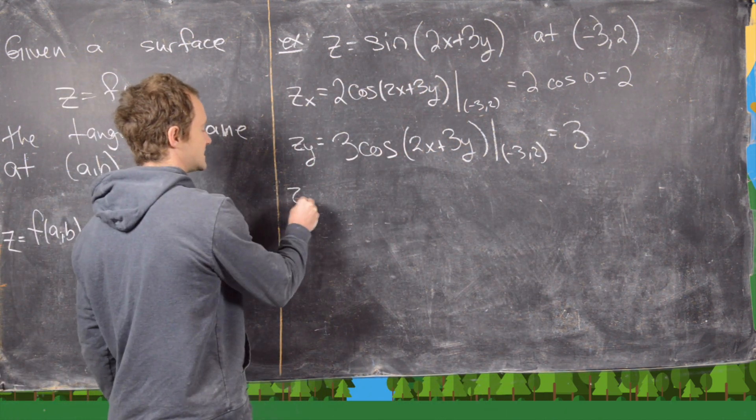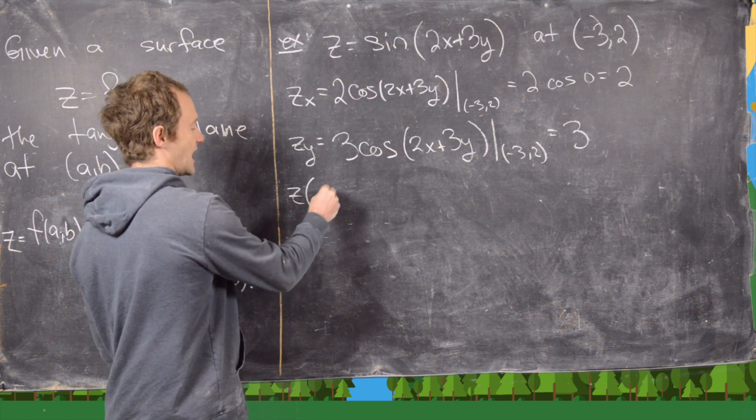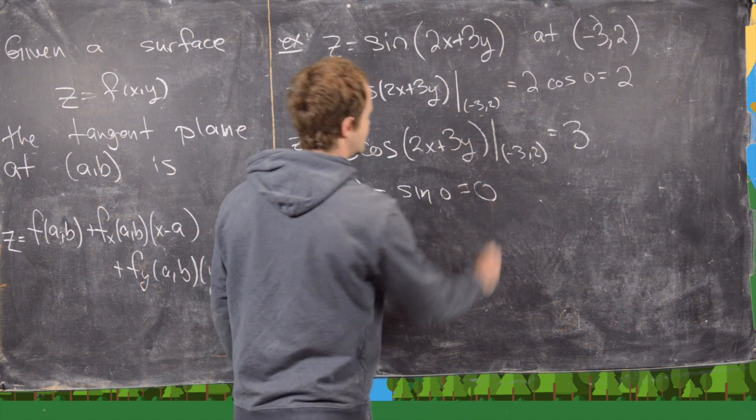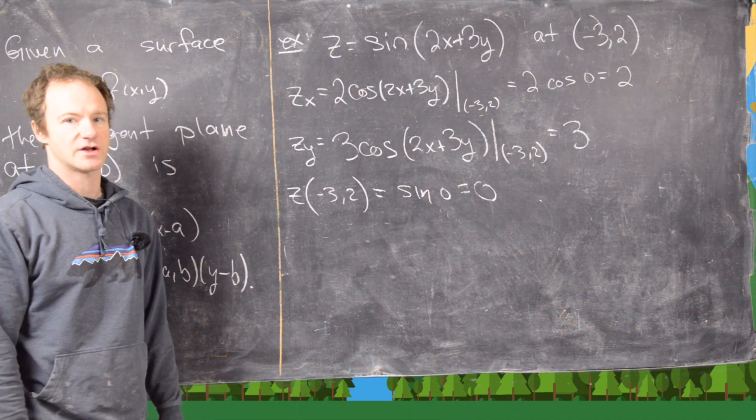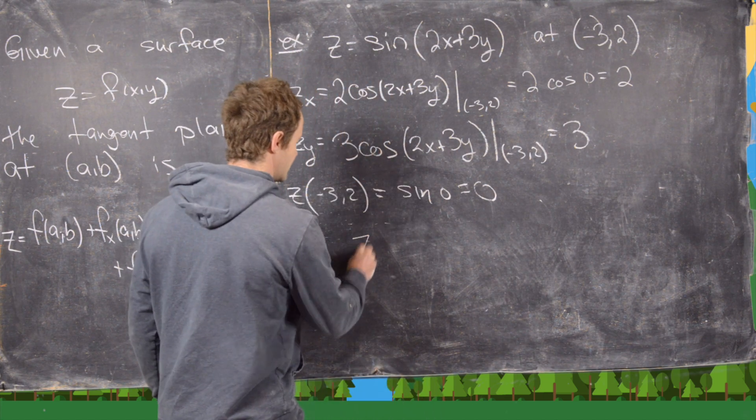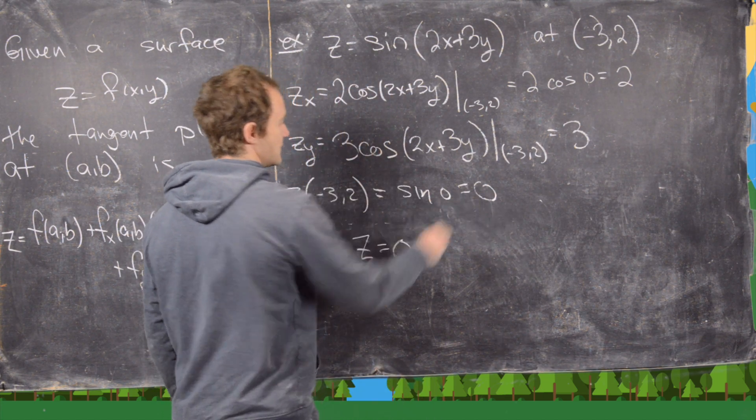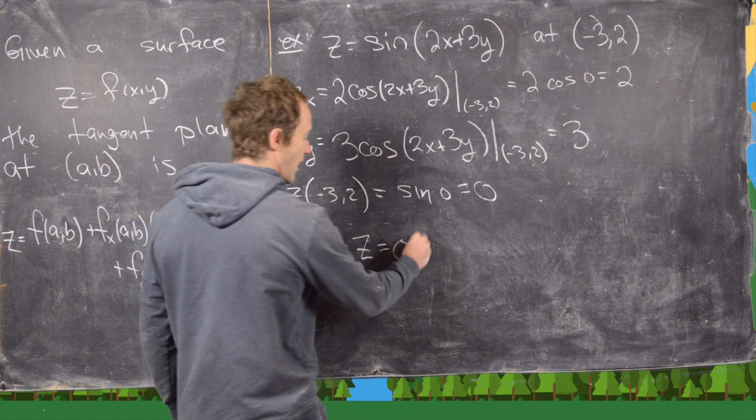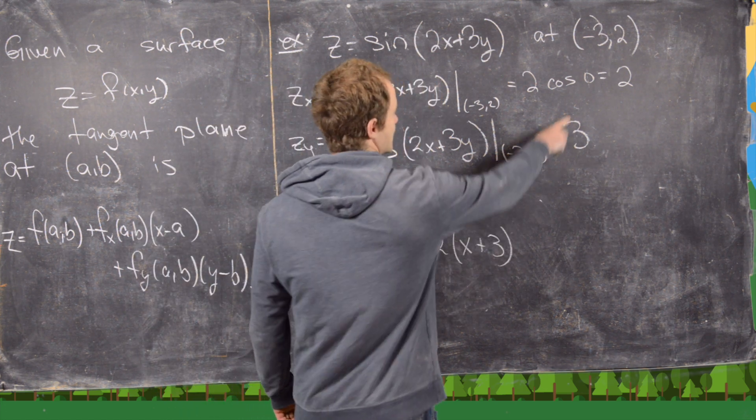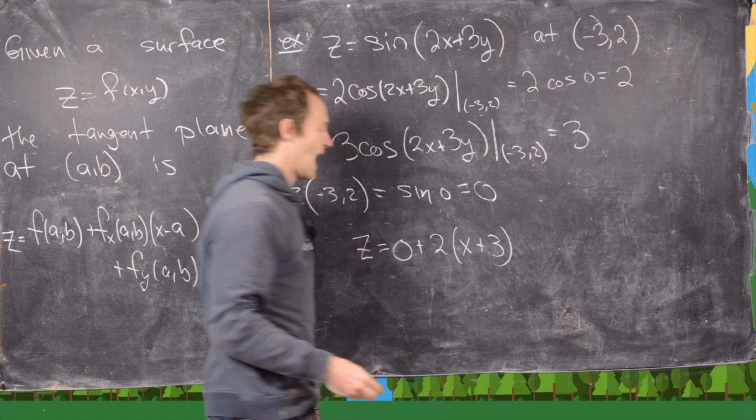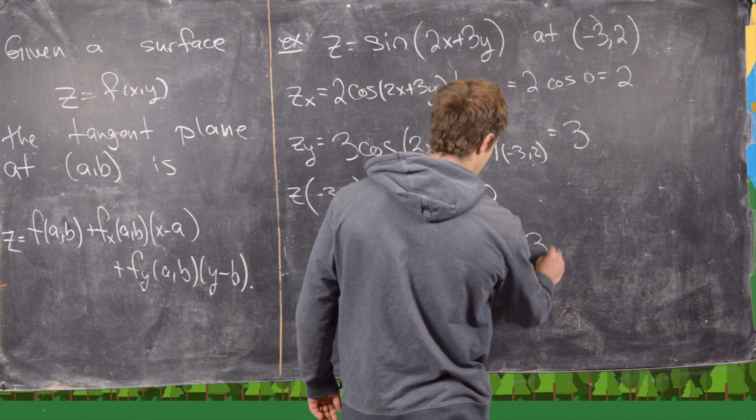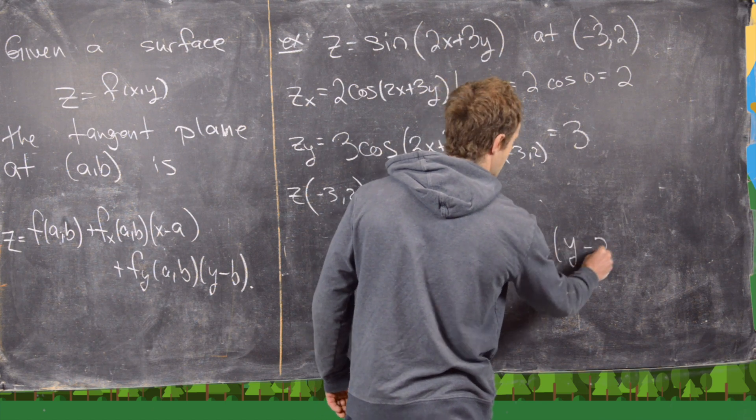Now let's evaluate this whole function at (-3, 2). That's going to give us sine of 0, which equals 0. Now we're ready to plug this into our formula. We'll have z equals 0 from this part right here, plus 2 times (x plus 3). So this is the x part of the vector, x minus the x part of the point, and then plus 3 times (y minus 2).